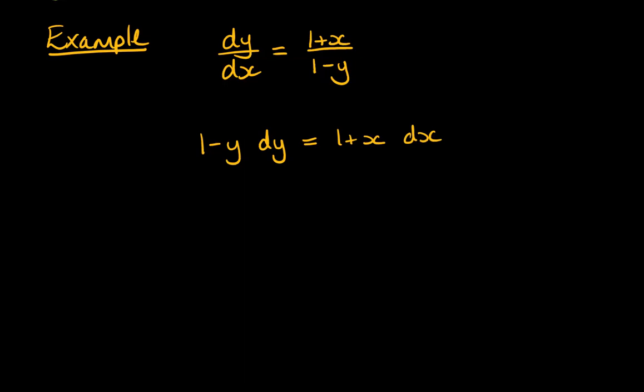So now we have something that's got all of the x's on one side and all of the y's on the other, and we integrate both sides of that. So I'm just going to pop that integral sign. If we integrate 1 minus y, we get that the 1 becomes y, the minus y becomes minus y squared over 2.